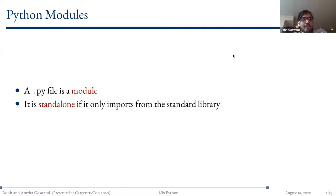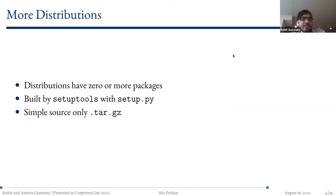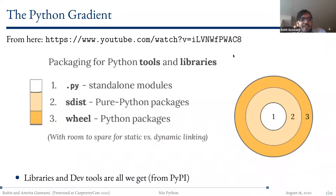A .py file is a simple module. If it only depends on the Python standard library, then if you've installed Python and you have a .py file, you're good to go — it works everywhere. If you have a pure Python package, all you really need is an __init__.py — called a 'dunder'. If you need something from the system, you can use setuptools with a setup.py, which does more complicated logic. Even then it's relatively simple — you have a source-only file which you can then distribute. This is a very simplified view from a YouTube video on Python packaging — the slides are on the GitHub repo.